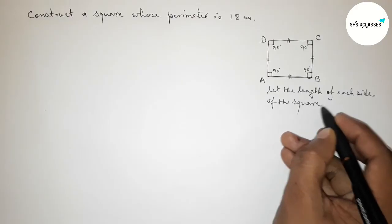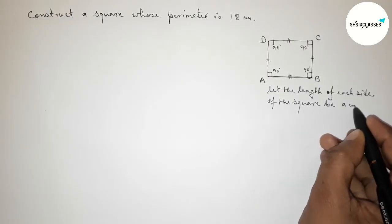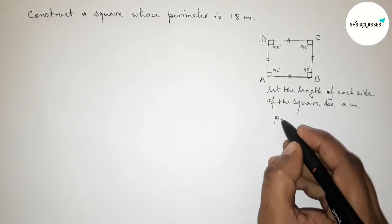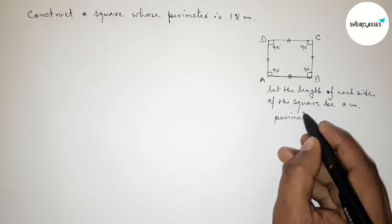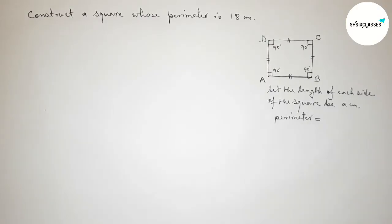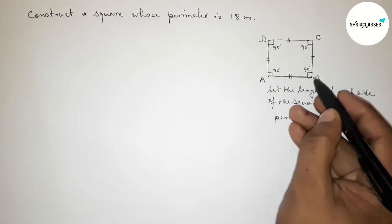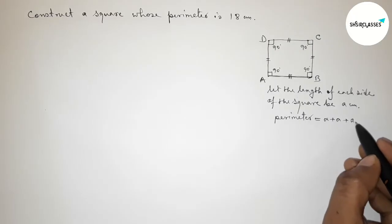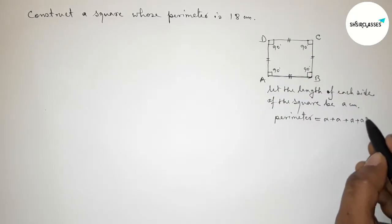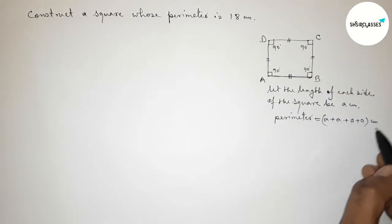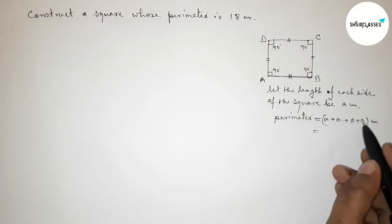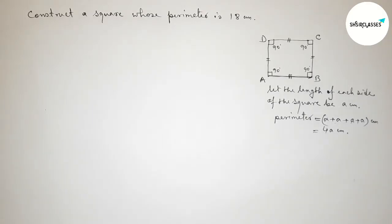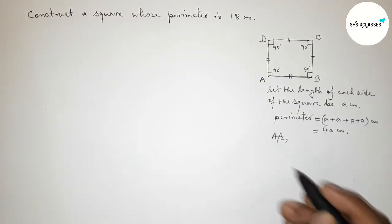Let the length of each side of the square be 'a' centimeters. Then the perimeter of the square equals to the sum of the four sides: a + a + a + a, which gives us 4a centimeters.